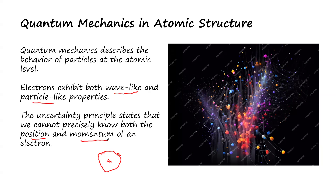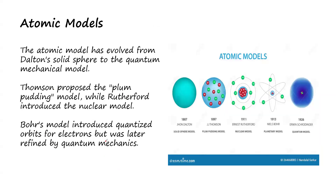So Heisenberg's uncertainty principle states that to determine the position and the momentum of an electron simultaneously is not possible. So then the next thing is atomic models. The atomic models have evolved from Dalton's solid sphere to the quantum mechanical model. Thomson proposed the plum-pudding model, while Rutherford introduced the nuclear model. According to John Dalton in the year 1807, he came up with the solid sphere model of an atom.